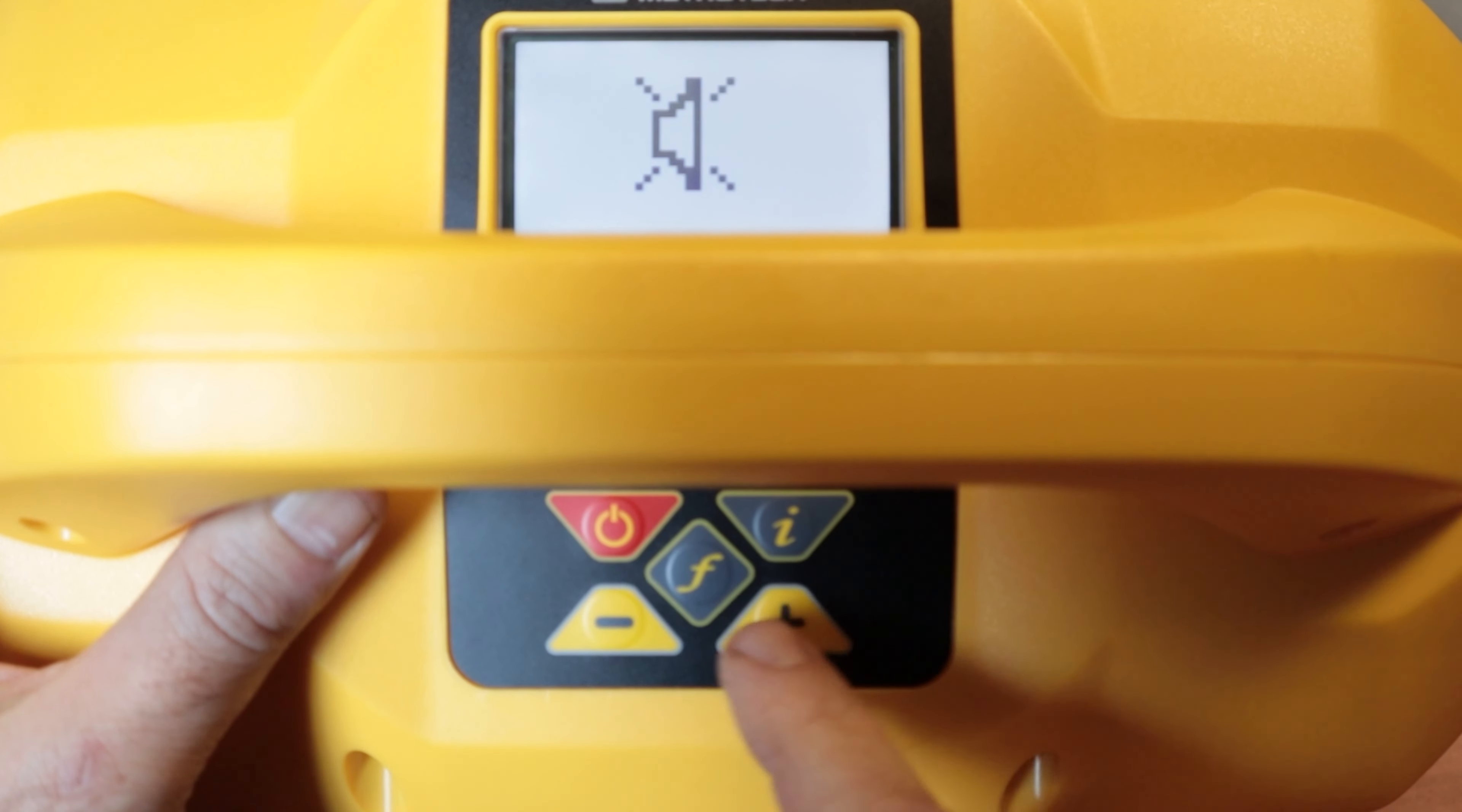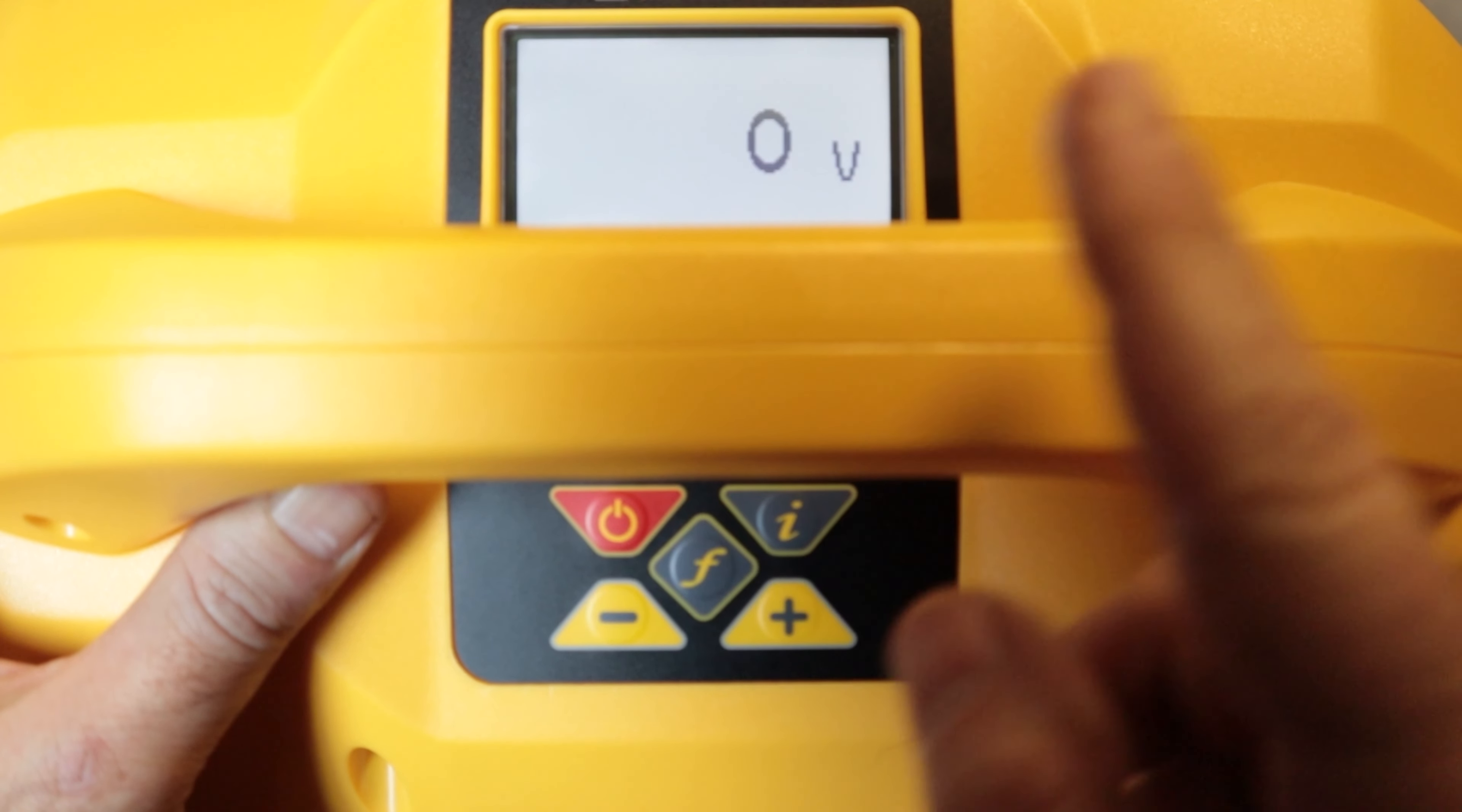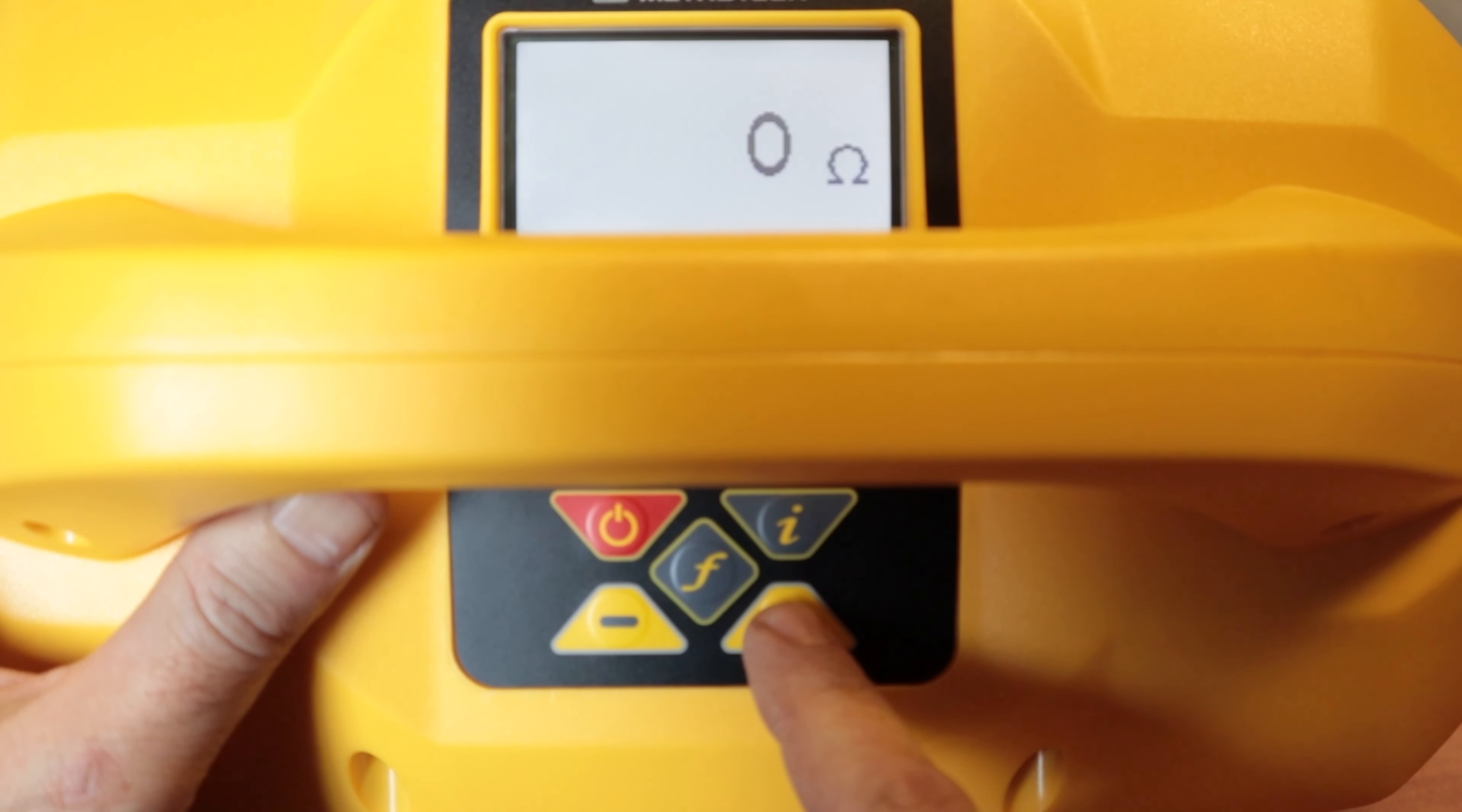First one I come to is my volume. I can use the plus and minus to increase or decrease the volume. Next one I come to is my voltage and I can use this to see if there is any voltage on the line that I am actually hooked up to with my leads. Next one I come to is an ohms test and this is good for when we are doing fault finding. This will go ahead and do a mega or an ohm check of that faulted utility that we may be trying to find.